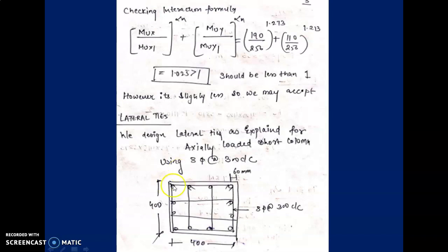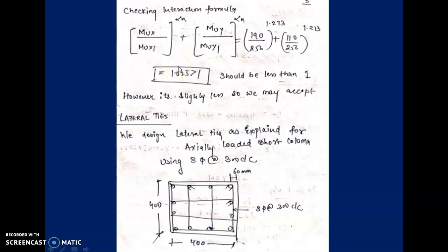Since 1.025 is only very slightly greater than 1, we may consider it acceptable. If the value were significantly greater than 1, we would need to either increase the percentage of steel or increase the section size. It should be less than 1 for complete safety, but since the excess is minimal, we accept this design.